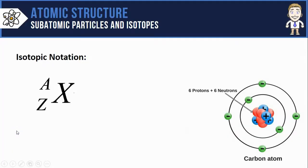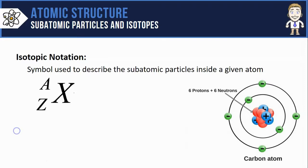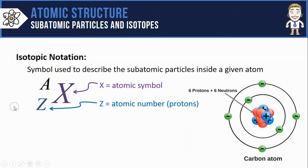Next, let's talk about something called isotopic notation. This is a symbol used to describe the subatomic particles inside a given atom. So instead of drawing out this entire atom and all the protons, neutrons, and electrons that it has, we can instead just use this quick notation style right here. The X is the atomic symbol, the Z on the bottom left is the atomic number, and the A on the top left is the atomic mass.